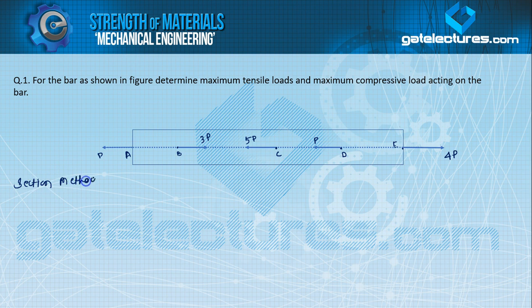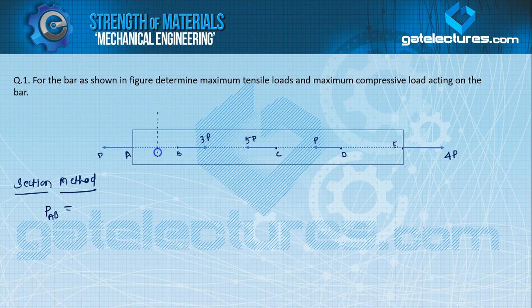If we talk about section AB, we denote it as P at AB — load at AB section. In the AB part, we take a section X-X. Then for this section, we sum up the forces on either the right side or the left side — both will be equal. If we look at the left hand side directly, only one load is acting there, and the value of that load is P. So P_AB is equal to P. According to sign convention, when you sum on the left hand side, towards left is taken as positive.